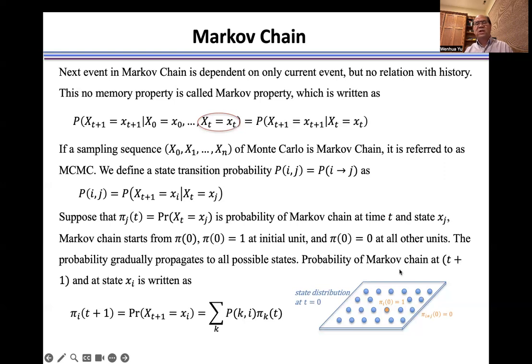Probability of Markov chain at time (t+1) and at state xi is written as πi(t+1) = Pr(Xt+1 = xi) = Σj P(j,i)πj(t). This probability of xi at t+1 is computed using all states at time t with state transition probability as coefficient.